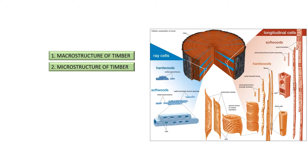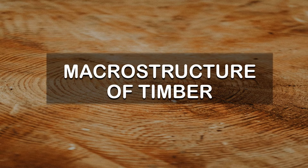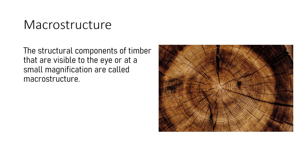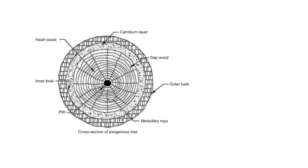We will be more focused on macrostructure of timber because in engineering purpose we are more focused on macrostructure, and most of the objective type questions for civil engineering exams come from the macrostructure of timber. The structural components of timber that are visible to the eye or at a smaller magnification is what we call macrostructure. The cross section of a tree has several components which differ from one tree to another.